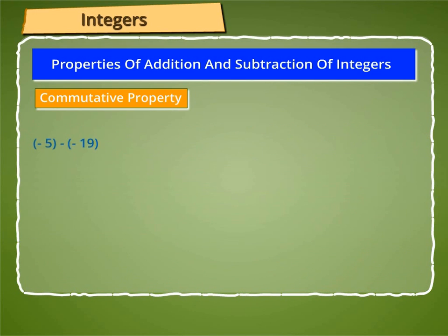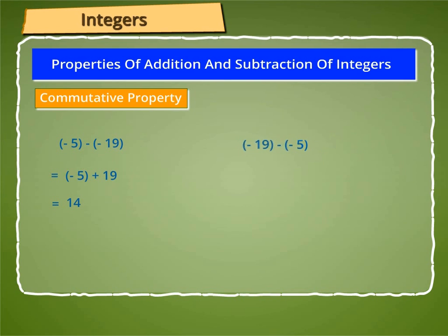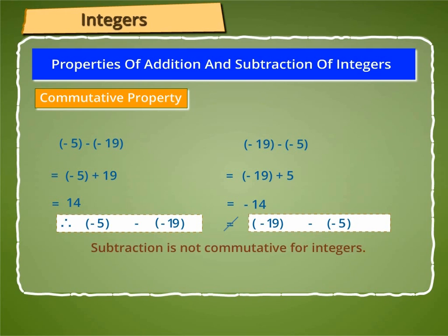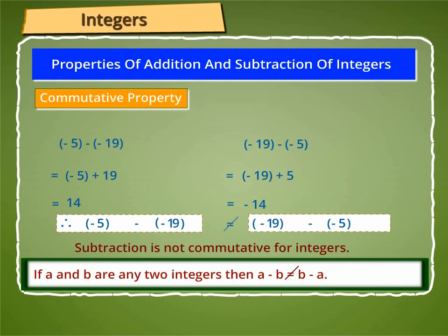Again, minus 5 minus minus 19 is equal to minus 5 plus 19, which equals 14. And minus 19 minus minus 5 is equal to minus 19 plus 5, which equals minus 14. Therefore, minus 5 minus minus 19 is not equal to minus 19 minus minus 5. Thus, subtraction is not commutative for integers. Hence, if A and B are any two integers, then A minus B is not equal to B minus A.